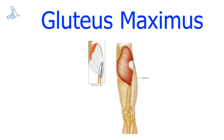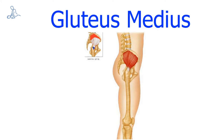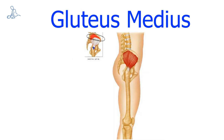Gluteus maximus. Gluteus medius. The origin of the gluteus medius is the upper external surface of the ilium. The insertion of the gluteus medius is the superior aspect of the greater trochanter. The action of the gluteus medius is to abduct and medially rotate the thigh.